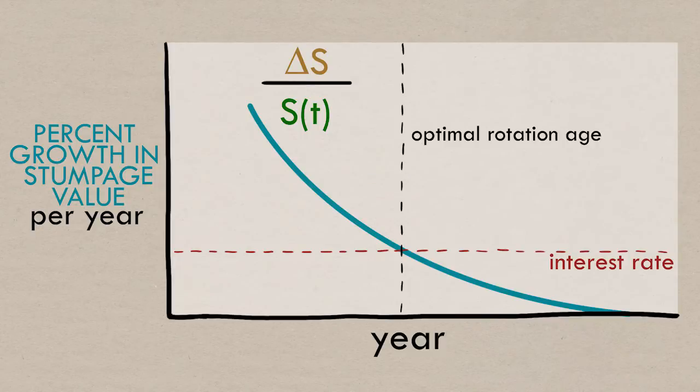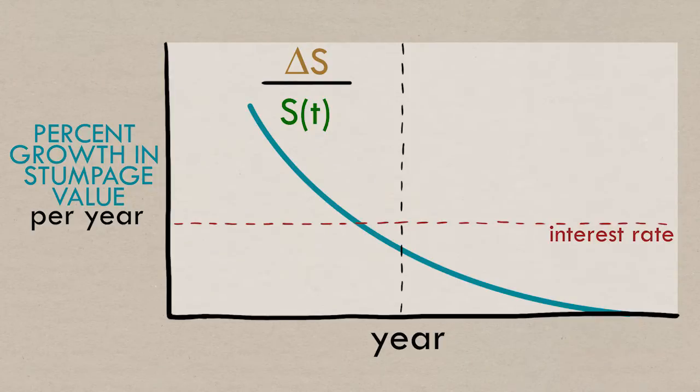This is the optimal rotation age to maximize the present value. If the interest rate were to increase, it's going to push that date earlier. The other areas we can invest in are relatively more profitable, so it's better to sell the trees earlier and just invest in those other things.